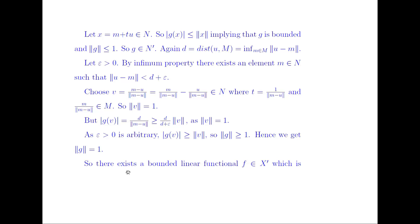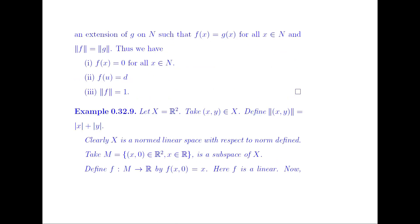So there exists a bounded linear functional F in the conjugate space of X which is an extension of G on N, with F(x) = G(x) and norm(F) = norm(G). Thus F(x) = 0 for all x ∈ M, F(U) = D, and norm(F) = 1. Hence we get the result.